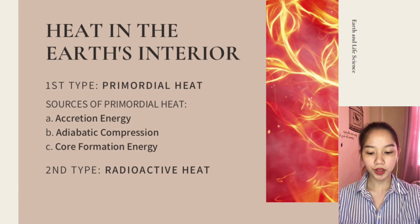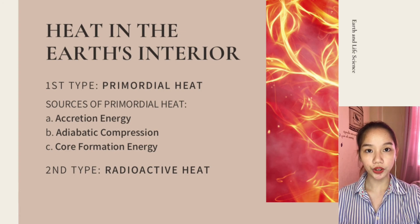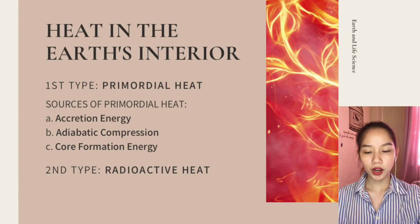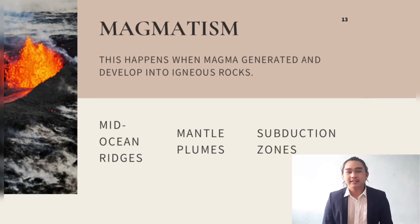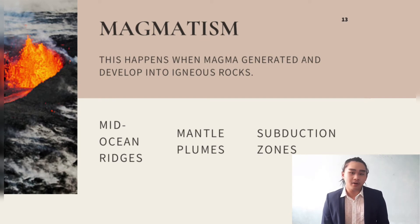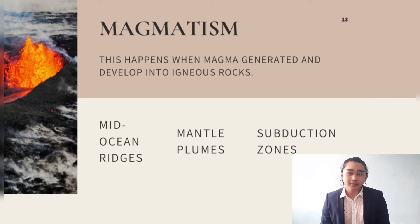The second type of heat in the earth's interior is radioactive heat, generated by radioactive decay. The third endogenic process is magmatism. This happens when magma is generated and develops into igneous rocks. Magma forms at mid-ocean ridges, mantle plumes, and subduction zones.